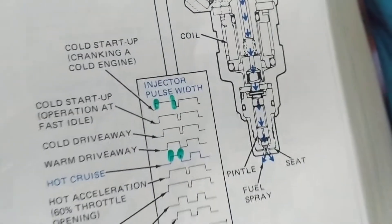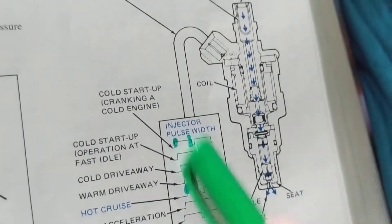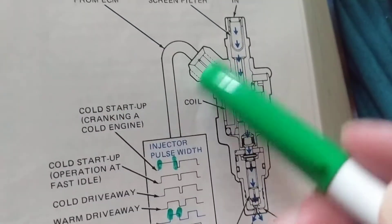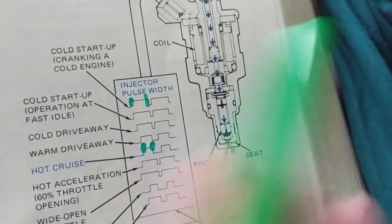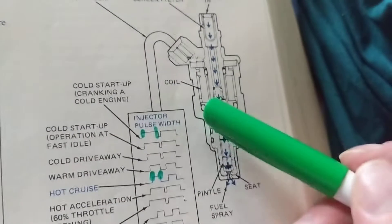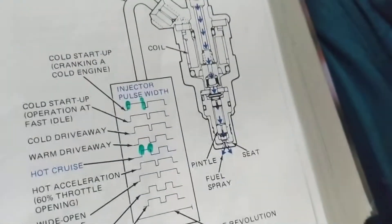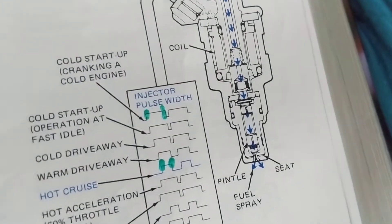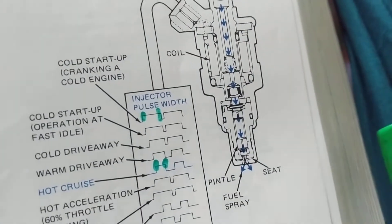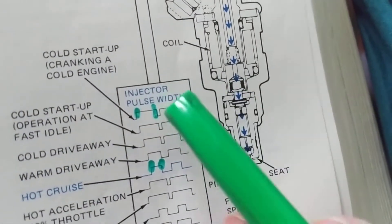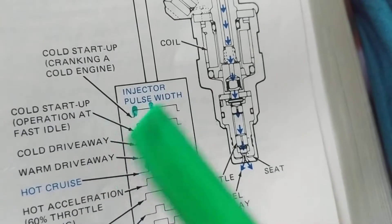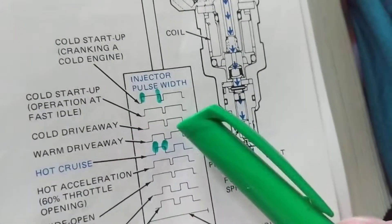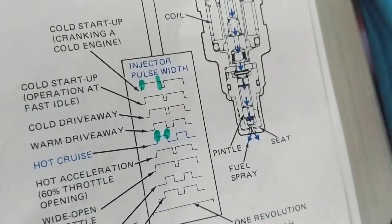Looking at it electronically, the electrical connector comes from the ECM — the computer. The computer sends a signal. On a cold start, say January, 20 degrees below freezing, you want to take your kids to school. The green lines I've shown here determine the pulse — it's called the width of the pulse. As the car warms up, this pulse will shrink.